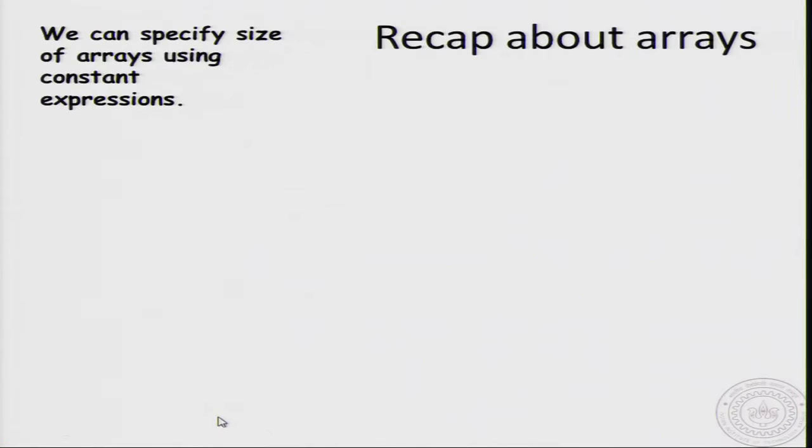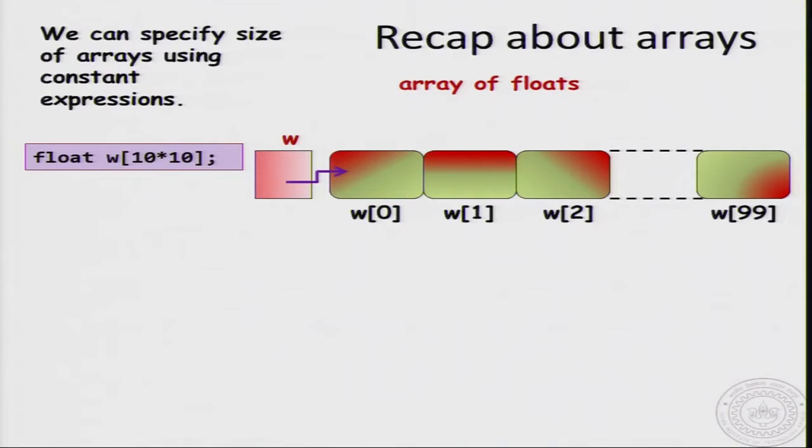Now, it is not important that we use numbers as the size of the arrays. We can also use constant expressions. For example, we can say float w[10*10]. Instead of saying 100, we can give an arithmetic expression which evaluates to 100. This has the same effect, it will aggregate an array of 100 elements starting from w[0] through w[99], and there is a separate box called w which has the address of the first location.